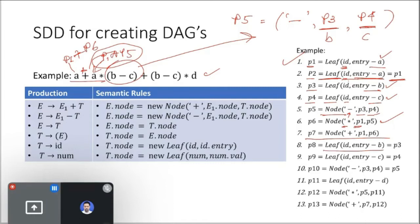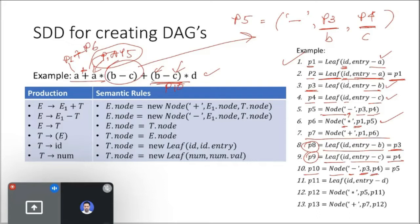For p8, it tries to generate a leaf entry for B again, but the entry for B is already there in p3. The leaf function checks whether an existing leaf is there, finds yes it is in process 3, and returns p3. Similarly for p9, the leaf function for C finds it already in p4 and returns p4. So p8 and p9 are never used in further calculation. P10 creates a minus node for B minus C, pointing to p3 and p4 — not p8 and p9, since those returned to existing entries.